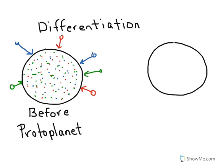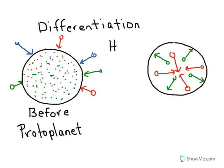Because you have a molten environment in the interior, you have the right conditions necessary for the differentiation process to occur. Your heaviest materials — represented by red — are going to sink towards the center, while your lightest materials — represented by green — are going to float to the surface. This has to do with density, which is mass per volume, not the same as weight.